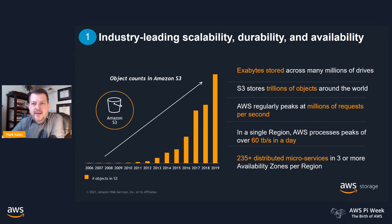The first major benefit is having access to S3's industry-leading scalability, durability, and availability. S3 operates at an incredible scale — millions of AWS customers store exabytes of data spanning trillions of objects in S3. At peak, we're seeing millions of requests per second and peak processing of over 60 terabytes per second in a single region. S3 delivers 11 nines of durability, made possible by three or more availability zones in each AWS region, meaning your data is always stored in at least three locations to ensure it's fully protected and available when you need it. S3 is also global in scale with over 25 regions worldwide.